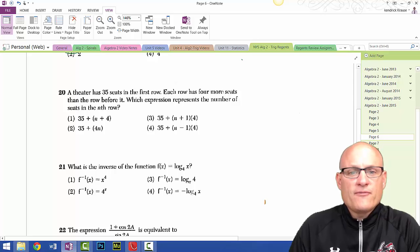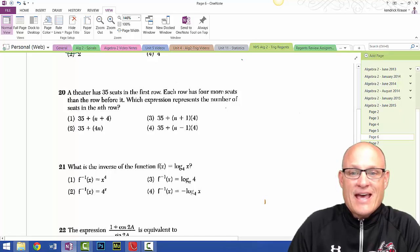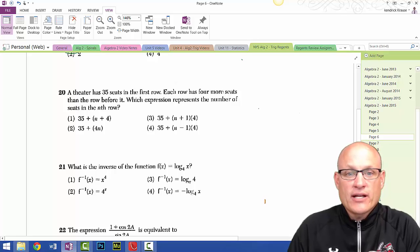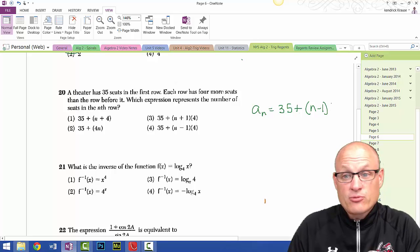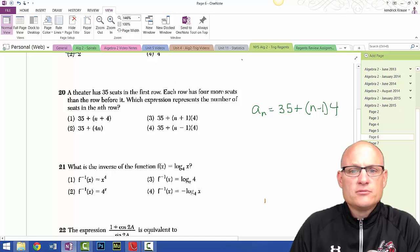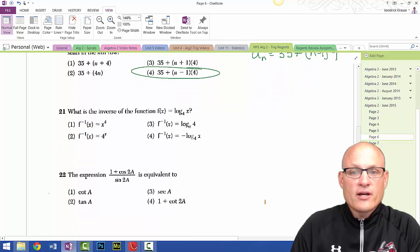Question 20: A theater has 35 seats in the first row. Each row has 4 more seats than the row before it. Which expression represents the number of seats in the nth row? This is an arithmetic sequence. And we're adding. So a sub n equals 35 plus n minus 1 times the difference of each row, which is 4. So there's my answer, choice 4.